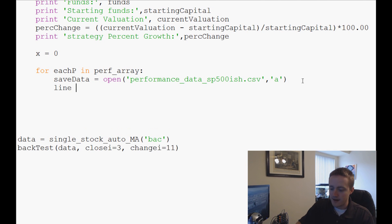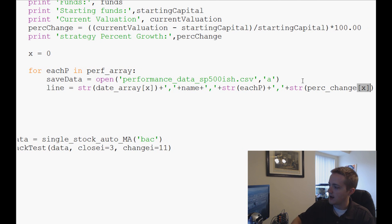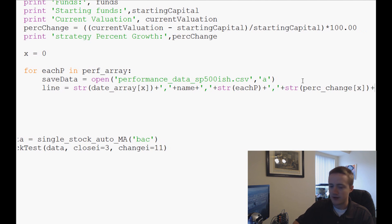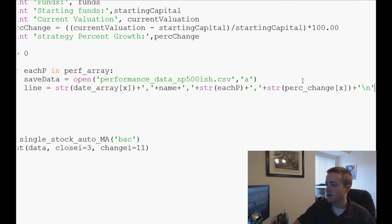And then we'll do plus that plus the name plus some commas here plus string each P plus another comma plus string perc_change X. And then all of that plus a new line. Okay. And there is a CSV, like module for Python.